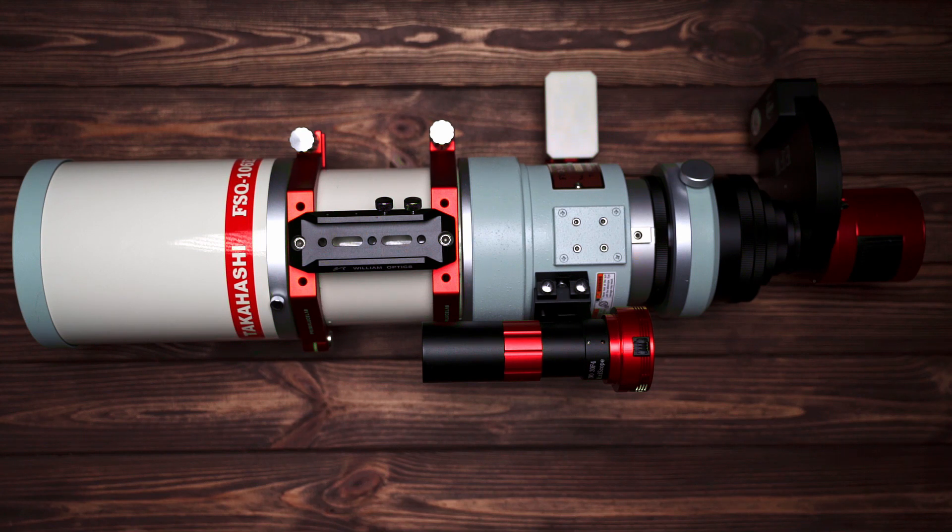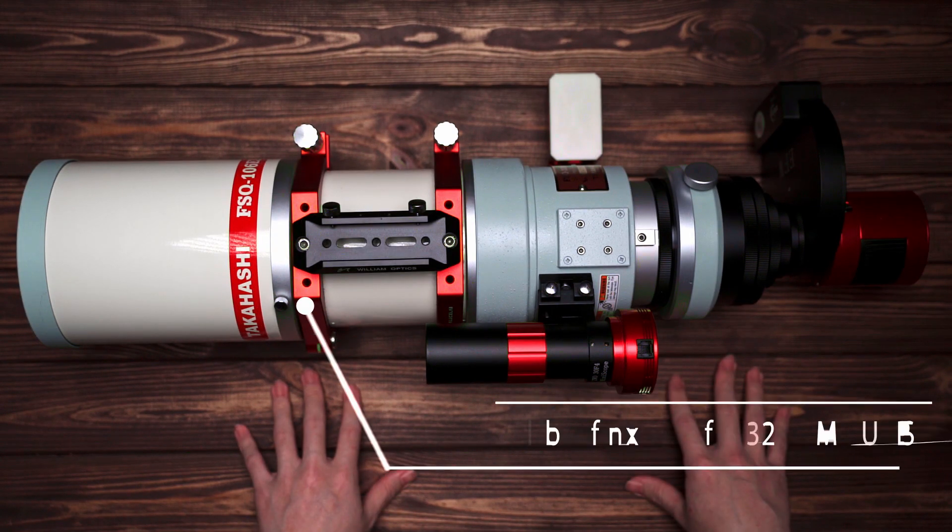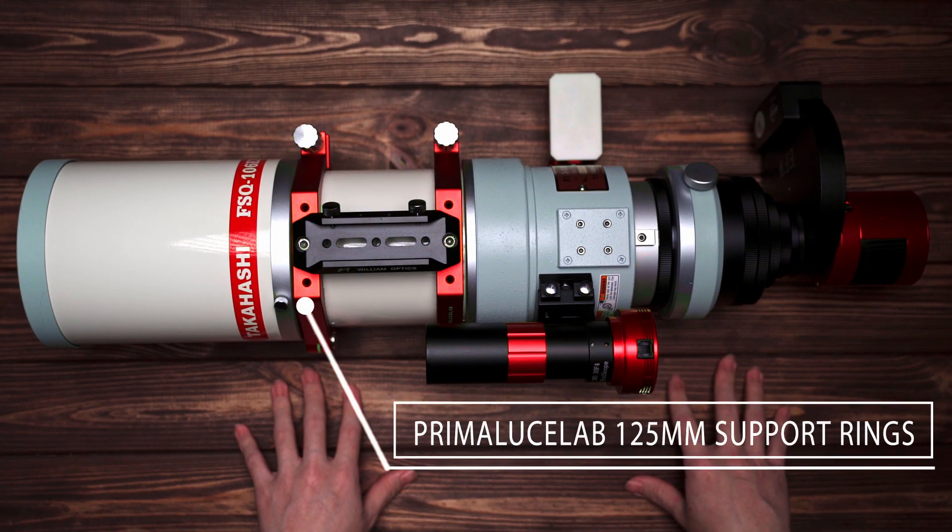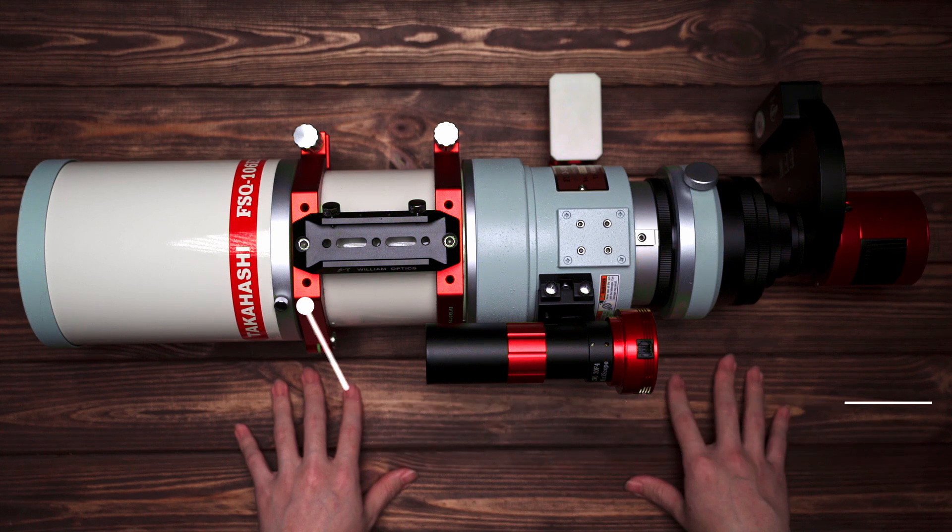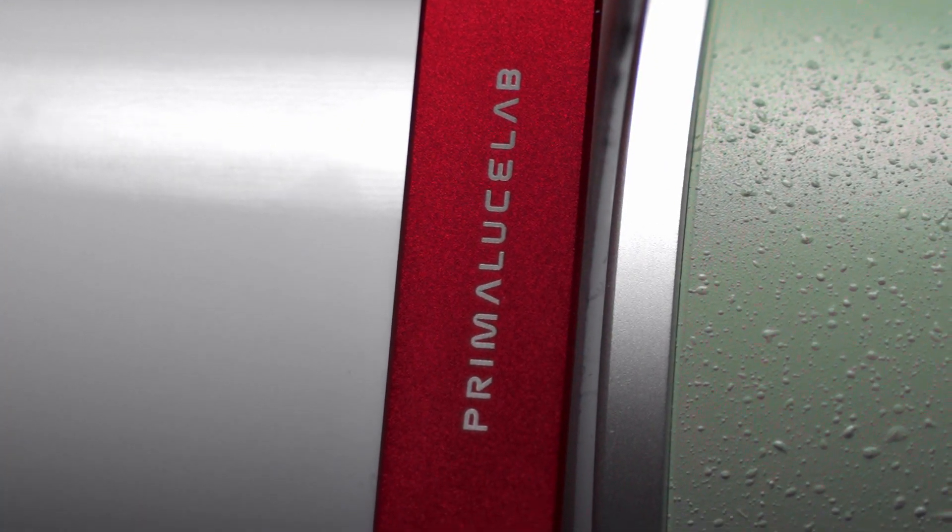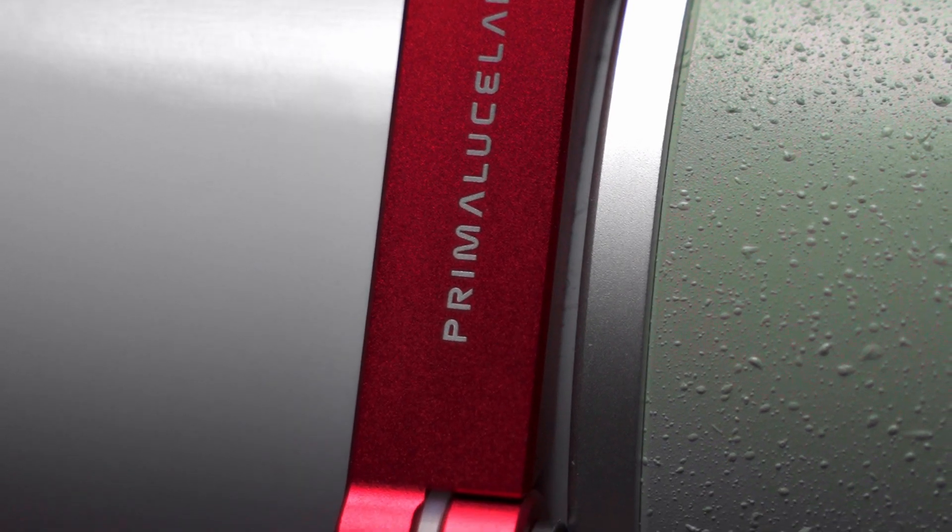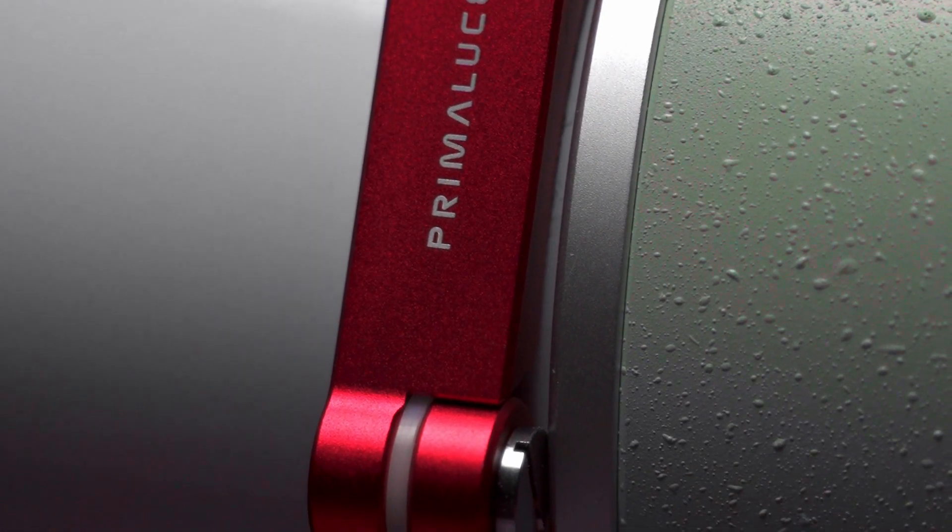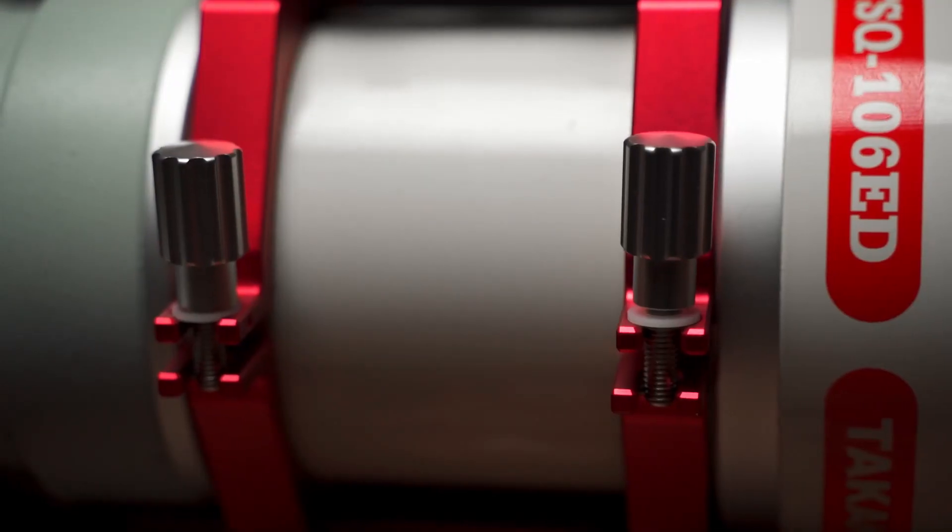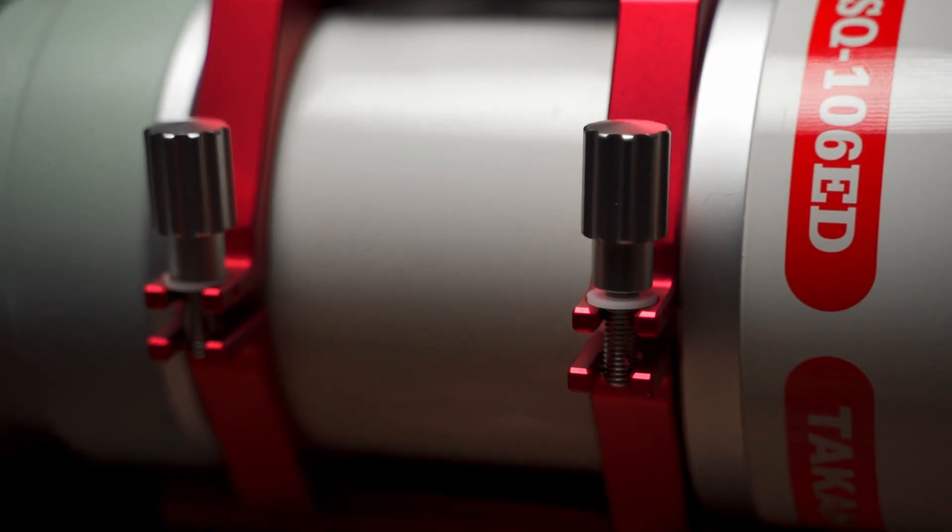Now let me show you guys my imaging setup for this telescope. The first thing that I have is the support rings. I'm using Primaluce Lab. Don't know if I pronounced that right. The size of this support rings is 125mm. The color looks great with 106. The build quality also feels great. Very great design.